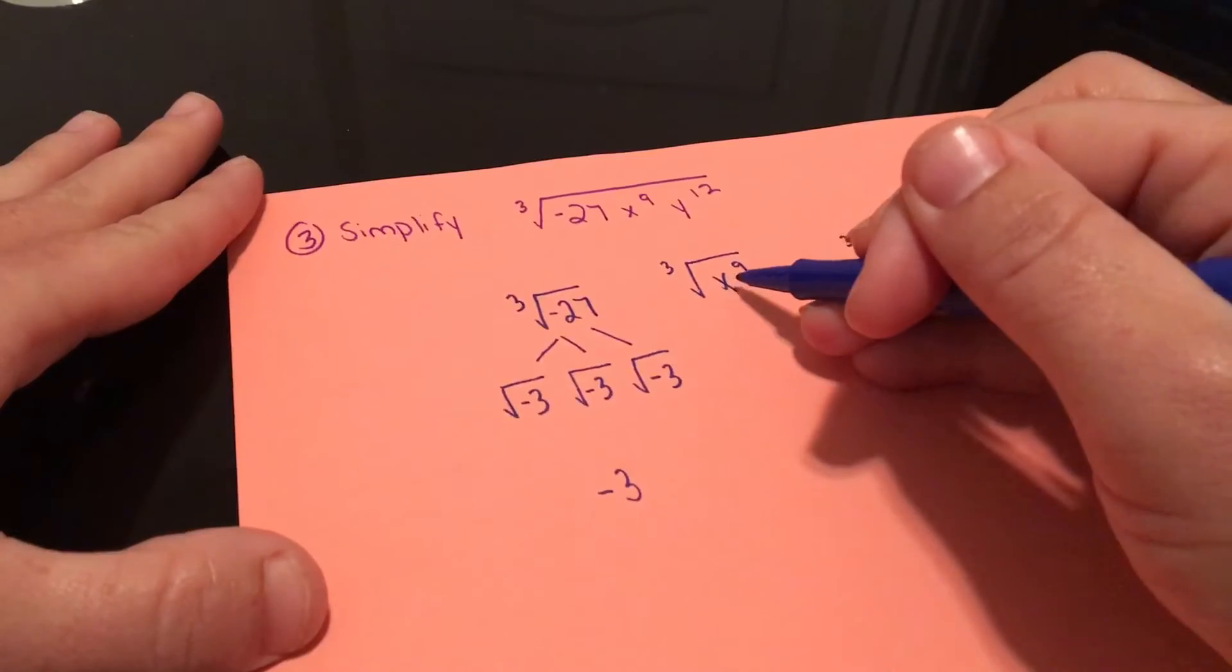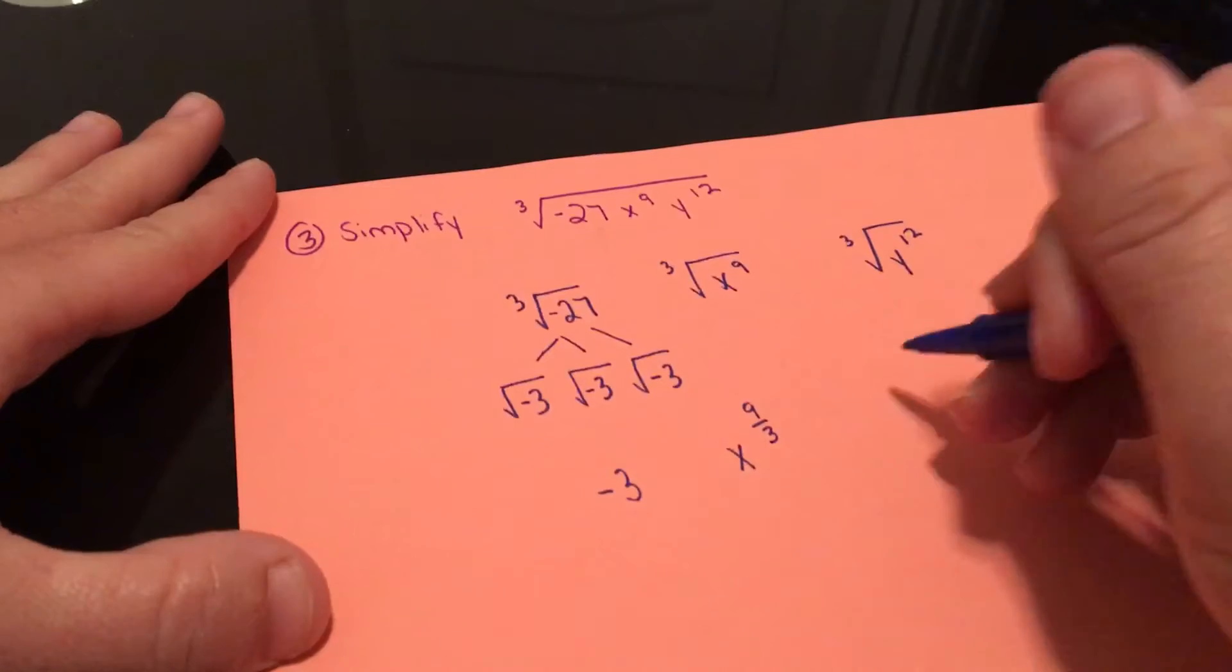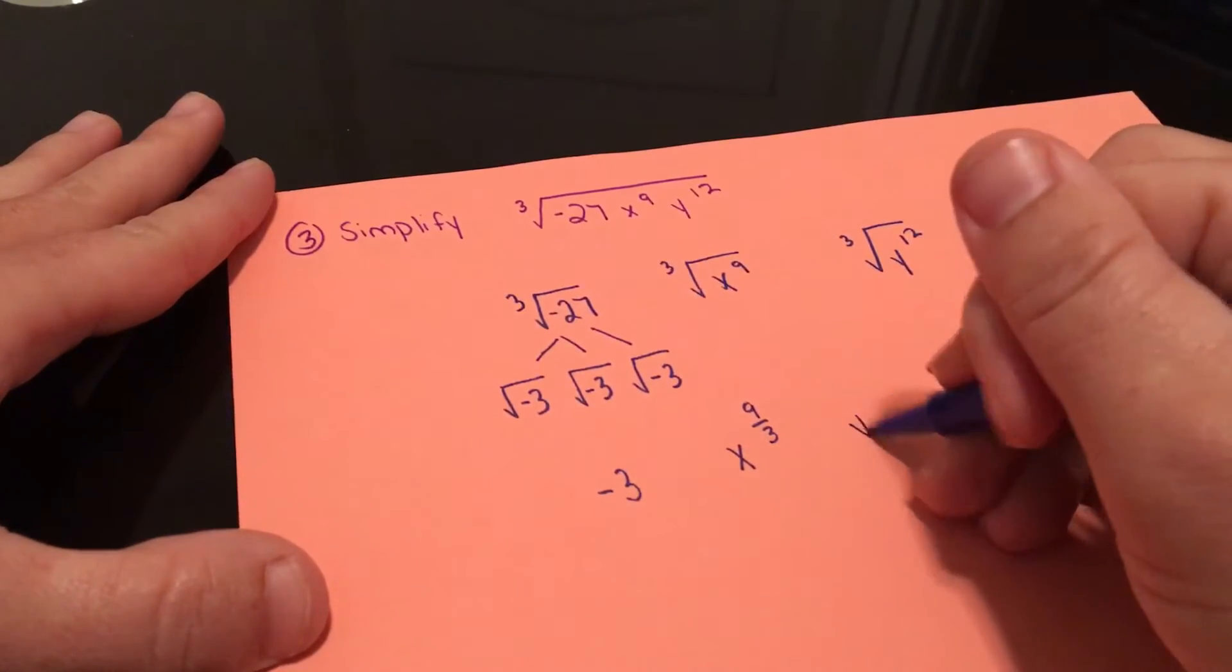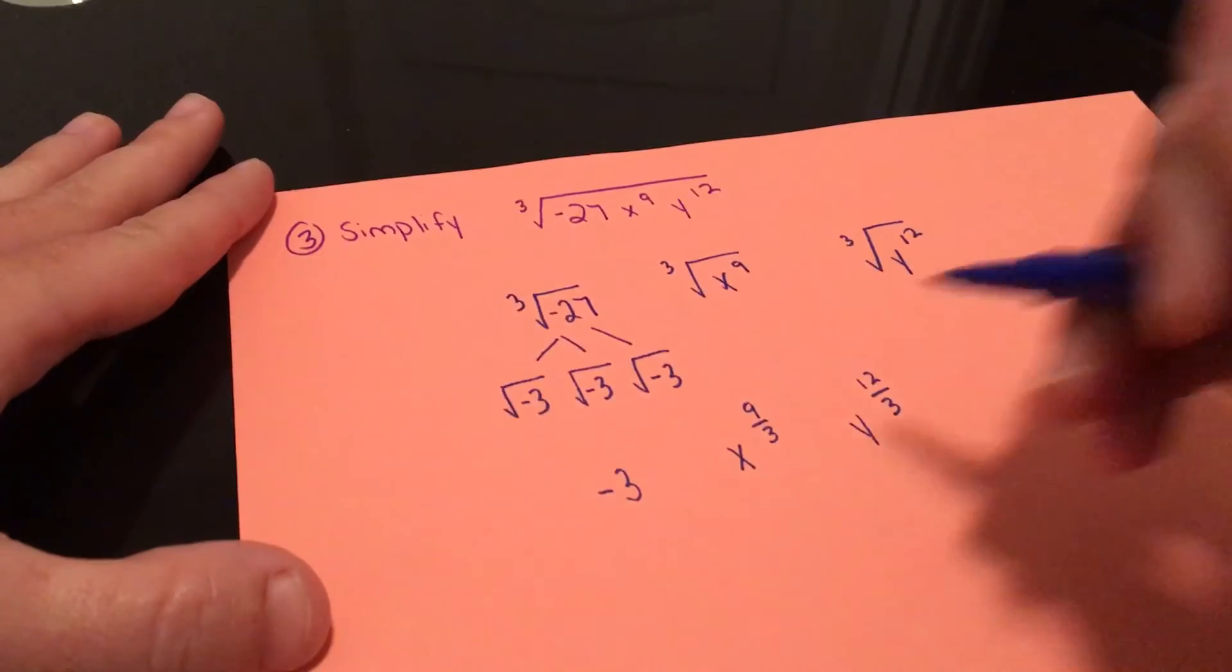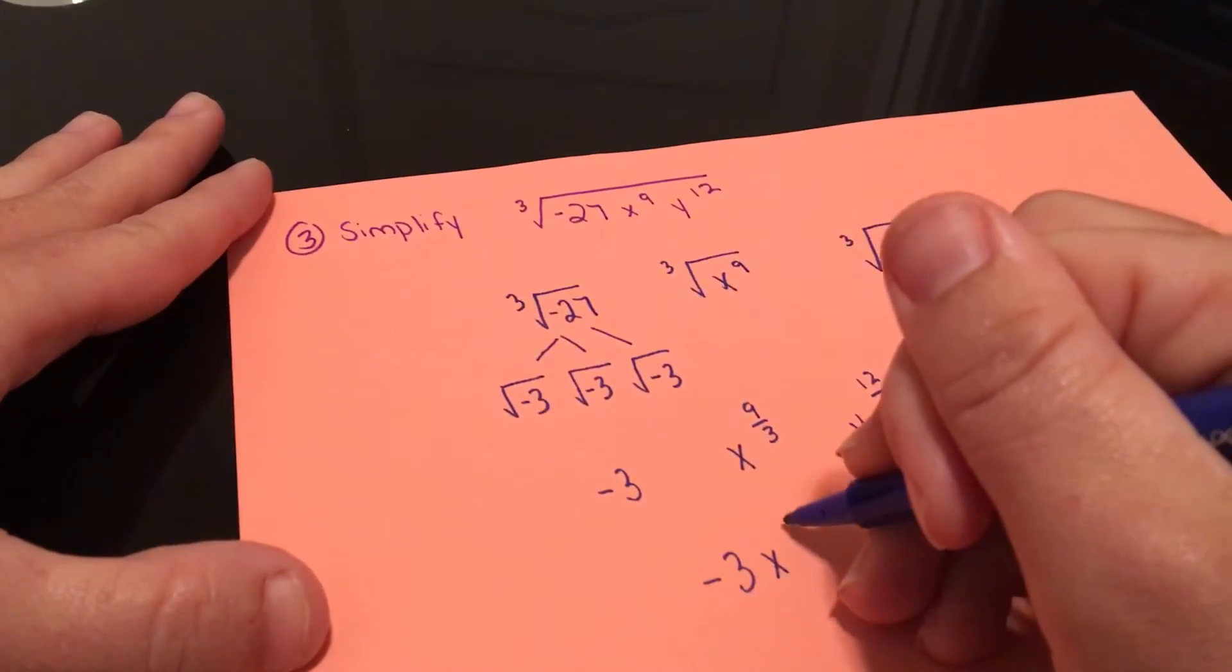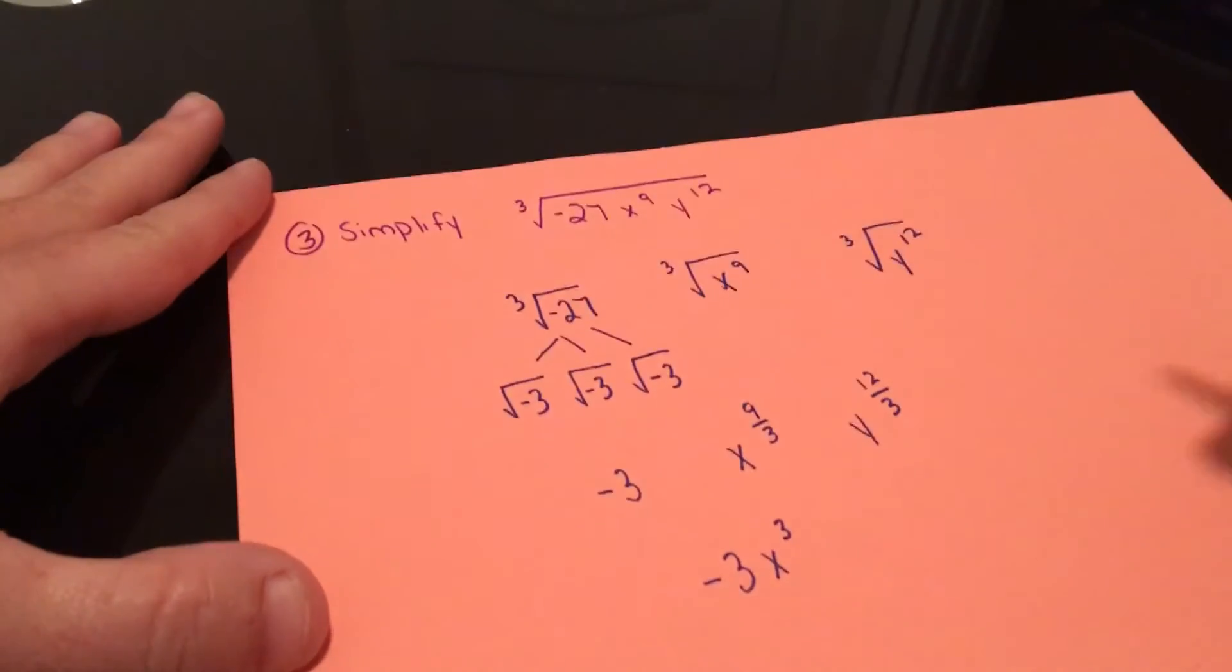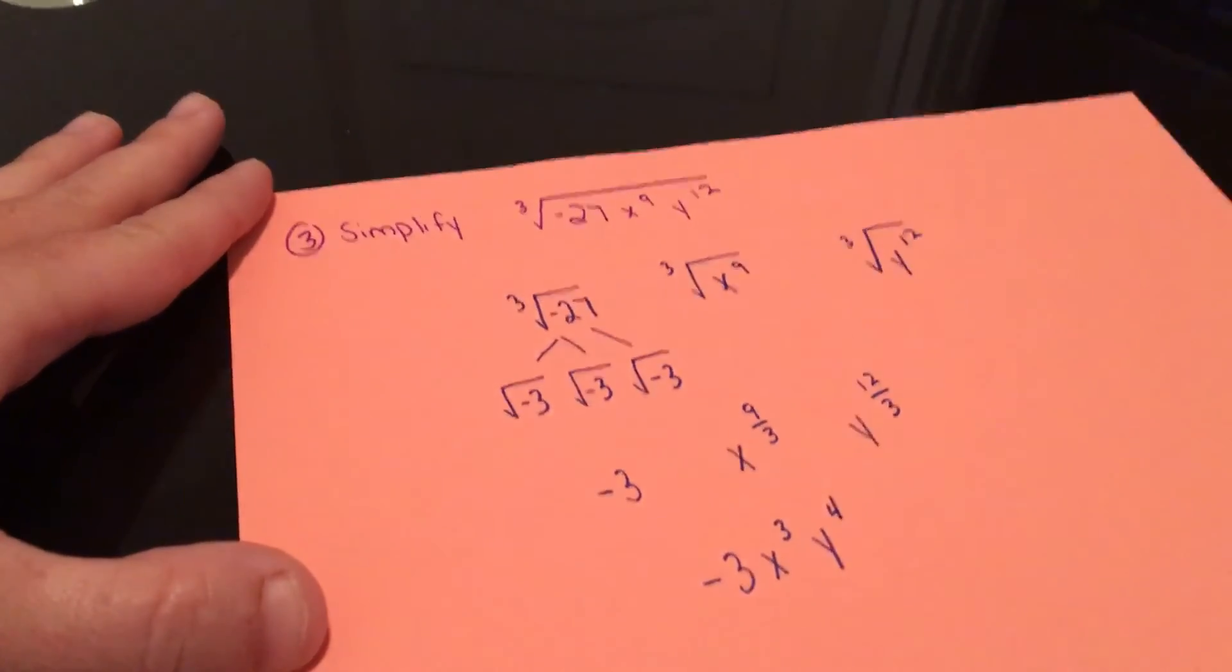Cube root of x to the 9th, that would be x to the 9 over 3, and then y to the 12 over 3. And then we would simplify each of these. So this would be a negative 3. x 9 divided by 3 would give me 3. 12 divided by 3 would give me 4.